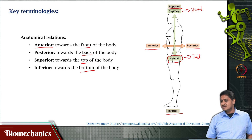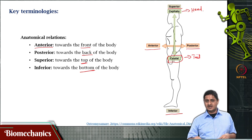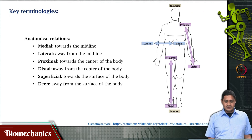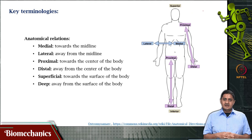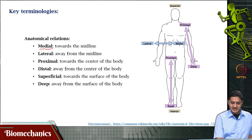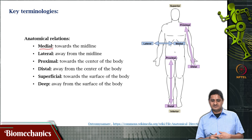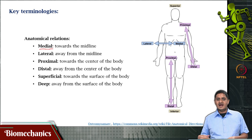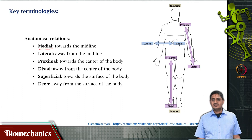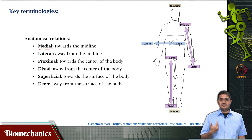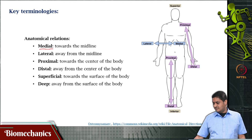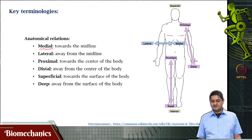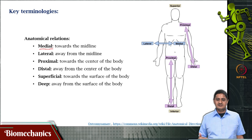We have looked at two dimensions — front/back and up/down — but what about left and right? Towards the midline of the body is called medial. Lateral means on the side or away from the midline. When standing, the chest is medial and the arms are on the lateral side.